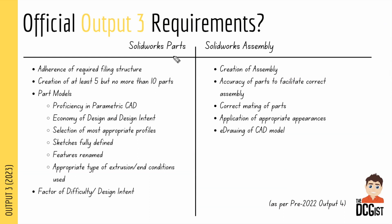Diving deeper into the requirements for output 3, there are two sections: SOLIDWORKS parts, now worth 15 marks, and the SOLIDWORKS assembly, worth 7 marks. To get full marks we need to ensure adherence to the file structure, creation of at least five parts but no more than ten, proficiency of parametric CAD, economy of design and design intent, selection of the most appropriate profiles, sketches are fully defined, features are renamed, and appropriate types of extrusions and end conditions are used.